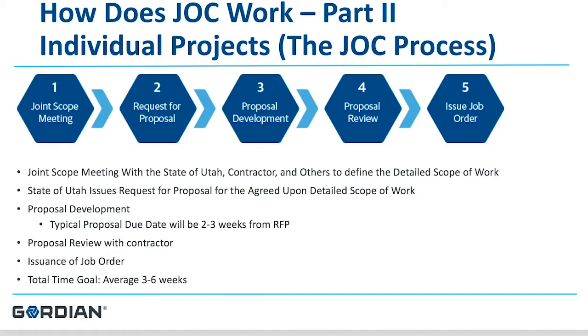The joint scope meeting is critical to the success for both the owner and the contractor. It's during the joint scope meeting that the owner lets the contractor know all of the different facets of the job. The contractor gets to learn all about the building they are about to renovate, including lifting up ceiling tile to find any unforeseen conditions, or pulling up carpet tile to see what's underneath the floor. The joint scope process helps lead to a far more accurate proposal in the end.